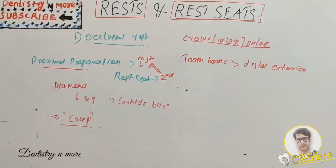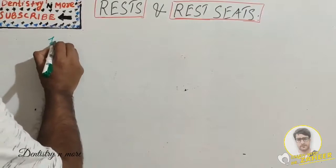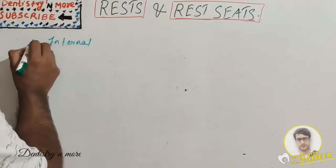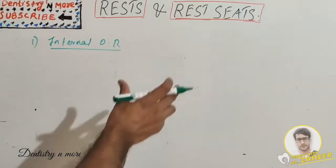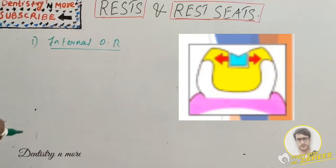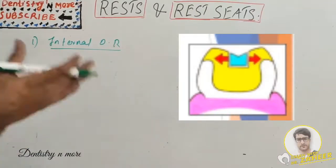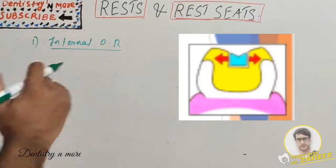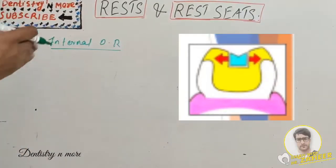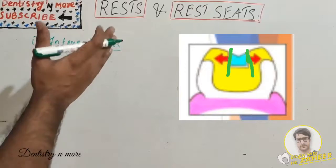The first type of occlusal rest is the internal occlusal rest. A totally tooth-supported partial denture may use an internal occlusal rest for occlusal support and horizontal stabilization. The occlusal support is derived from the floor of the rest seat and an additional occlusal bevel if provided. Horizontal stabilization comes from the near-vertical walls of this rest seat. It should be parallel to the path of placement and slightly tapered occlusally.